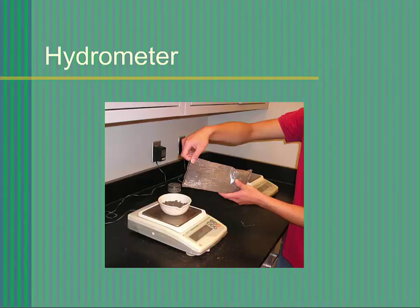First, weigh an empty evaporating dish. Then add soil to the dish until the desired weight is acquired. Obtain a second sample of the same soil for moisture content measurement. Record all your values on your datasheet.